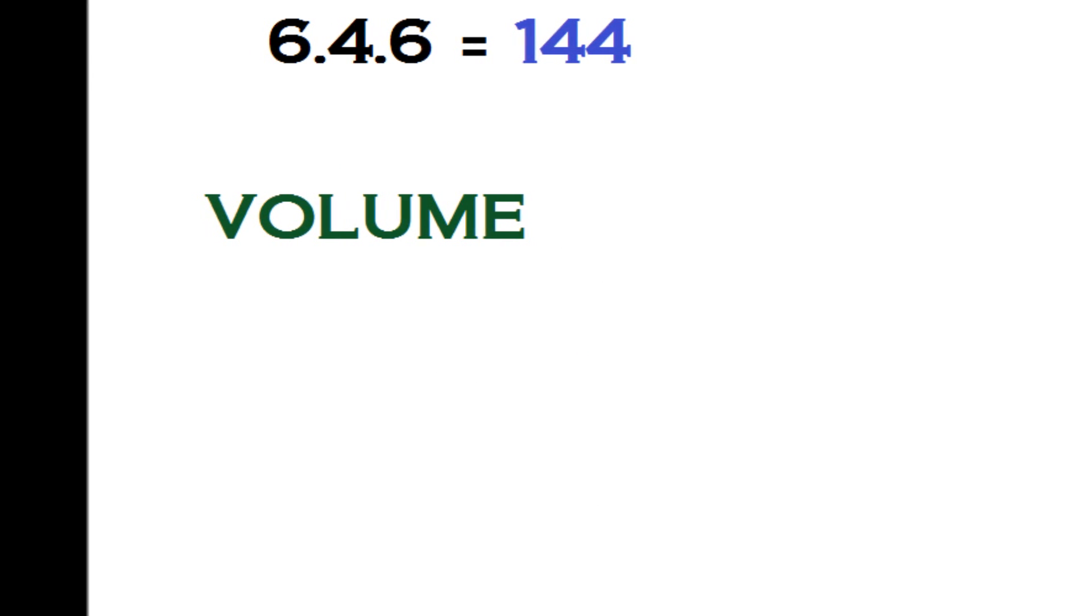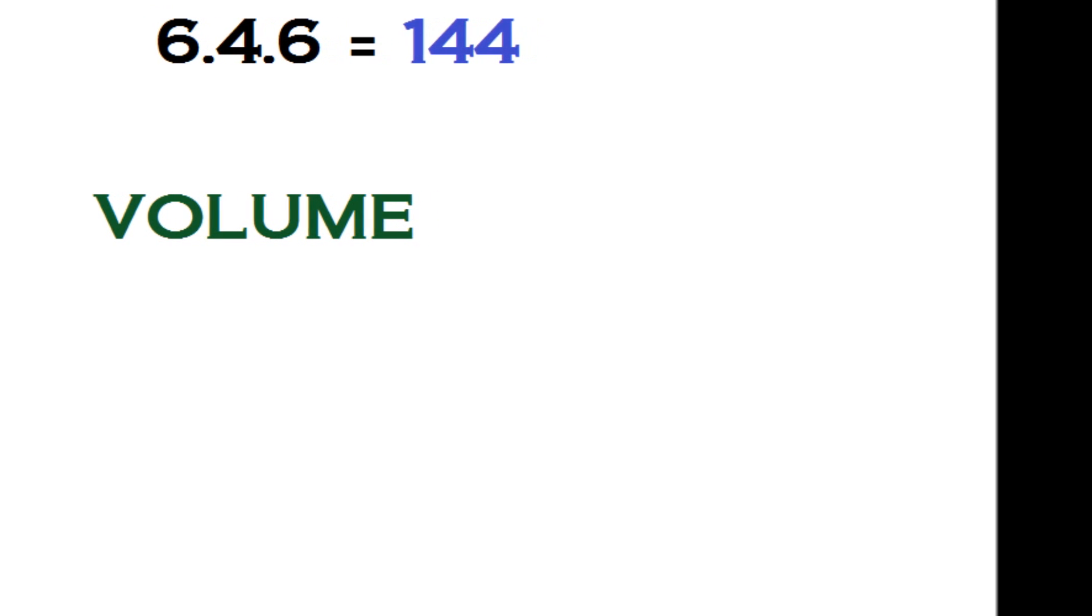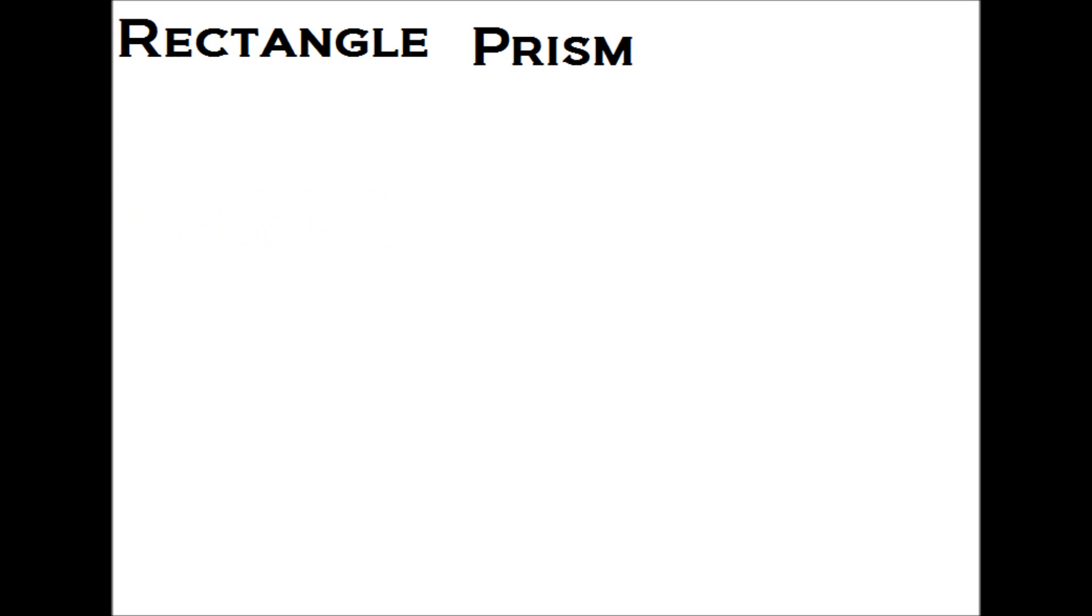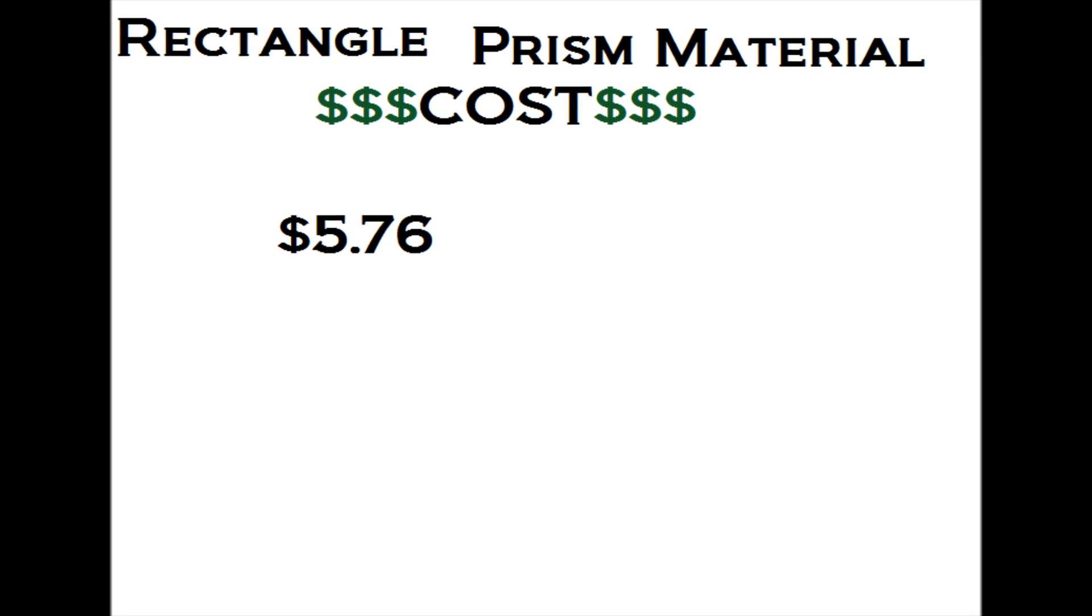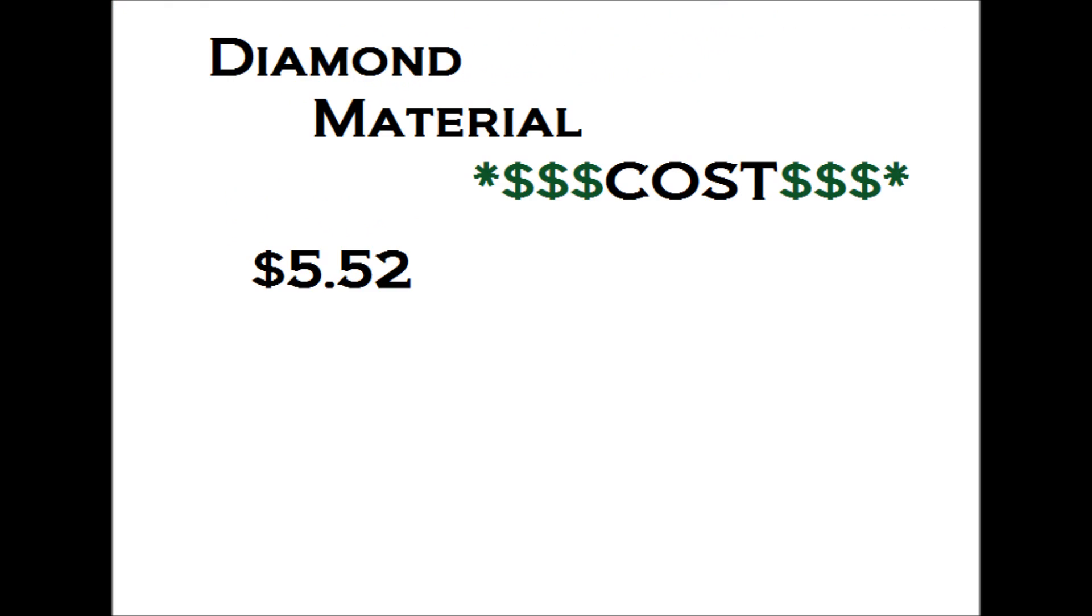The volume of my diamond would be 6 times 4 times 6, which would be 144. The material cost of my rectangular prism would be $5.76, and the material cost for my diamond would be $5.52.